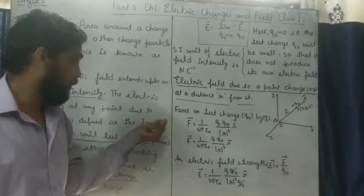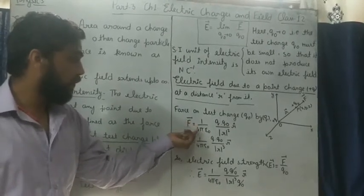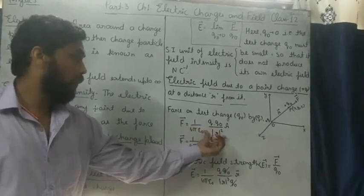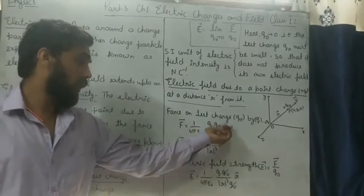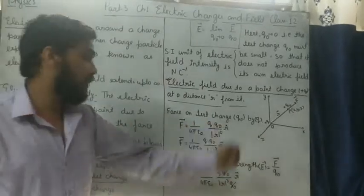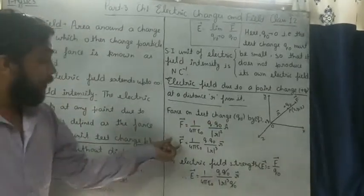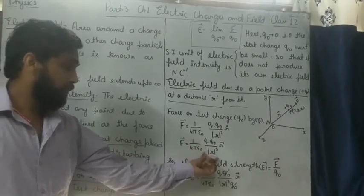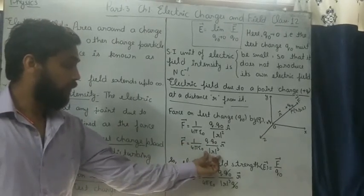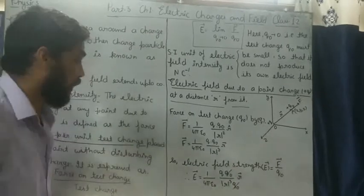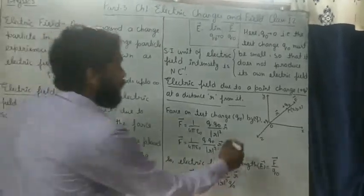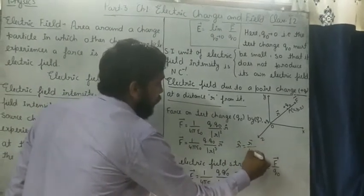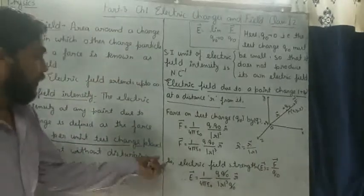As previously studied, vector F = (1/4πε₀)(QQ₀/|R|²)R̂, where R̂ is the unit vector. This equals (1/4πε₀)(QQ₀/|R|³)R, since R̂ = R/|R|.